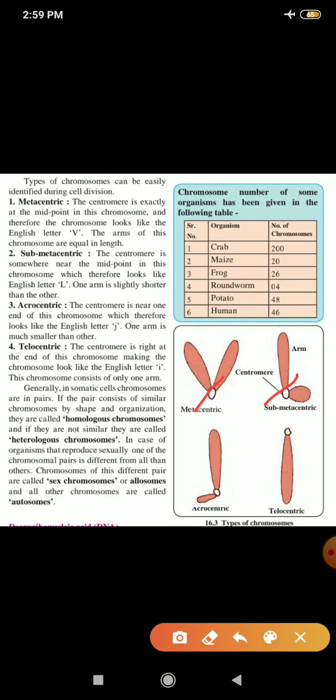Now, next, the third one. Acrocentric chromosome. The centromere is near one end of the chromosome. Looks like letter J, English letter J. One arm is much smaller than the other.